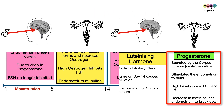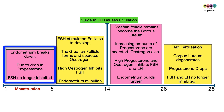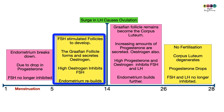A basic summary of the menstrual cycle: Day 1 commences with menstruation, when the endometrium is breaking down because progesterone levels have dropped. When progesterone levels are low, FSH production is no longer inhibited, so the pituitary gland starts to produce Follicle Stimulating Hormone. FSH then travels in the blood to the ovaries, where it stimulates follicles to develop.